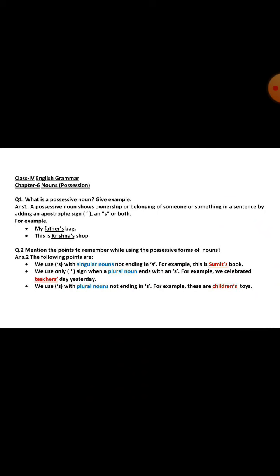Here in this picture, you can see there are two questions. The first question is: what is a possessive noun? Give an example. A possessive noun shows ownership or belonging of someone or something in a sentence by adding an apostrophe sign, an S, or both.